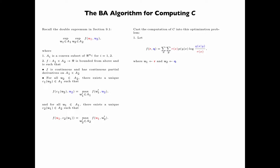In the above expression, R plays the role of U1 and Q plays the role of U2 in the double supremum problem. Let A1 be the set of all strictly positive input distributions R, that is Rx greater than 0 for all x and summation of Rx equals 1, where A1 is a subset of the Euclidean space of dimension equal to the size of the alphabet X.